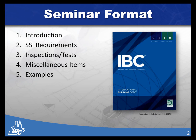There are five main sections to this presentation. We're going to do an introduction to special inspections — why do we have them, why are they important, and how did they come to be? We'll delve into what the actual statement of special inspection requirements are in the code. We'll talk about the inspection and testing provisions in sections 1704 and 1705 of the IBC. We'll also discuss miscellaneous items, then get into examples to show what a statement of special inspections should look like for different project types.